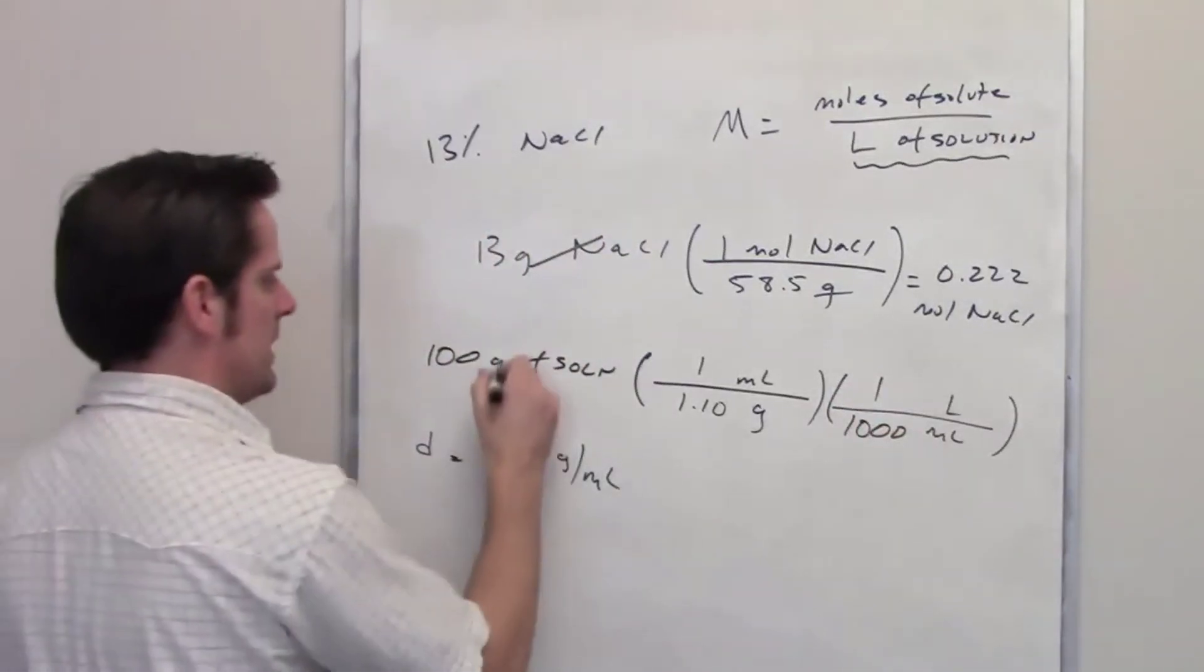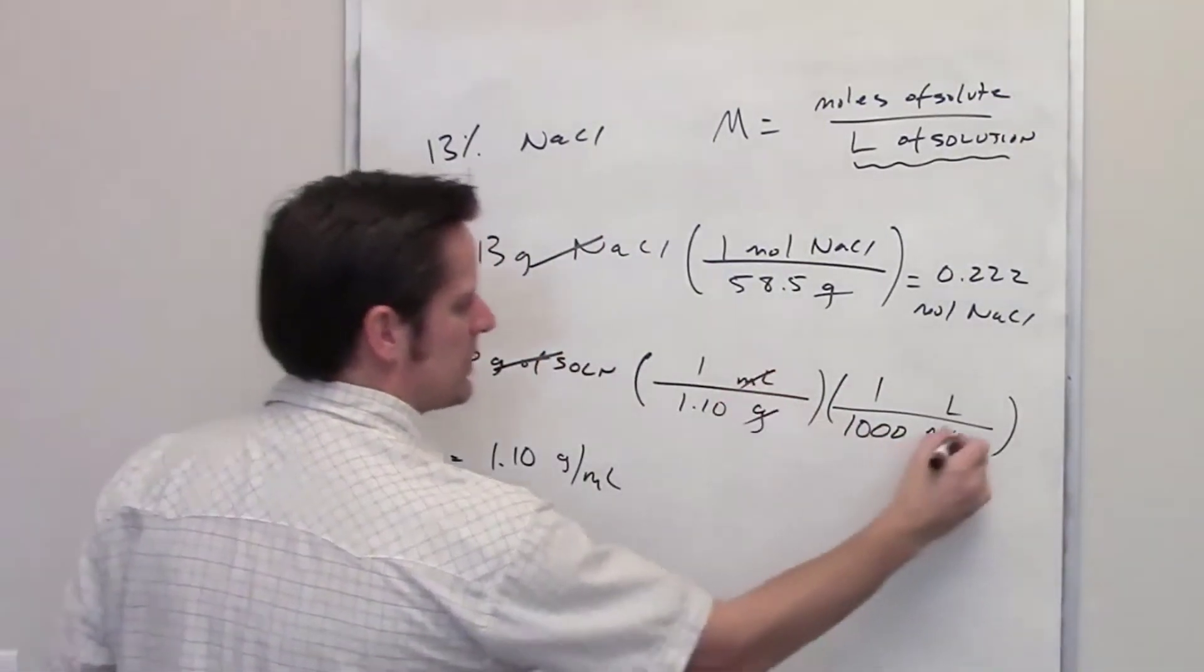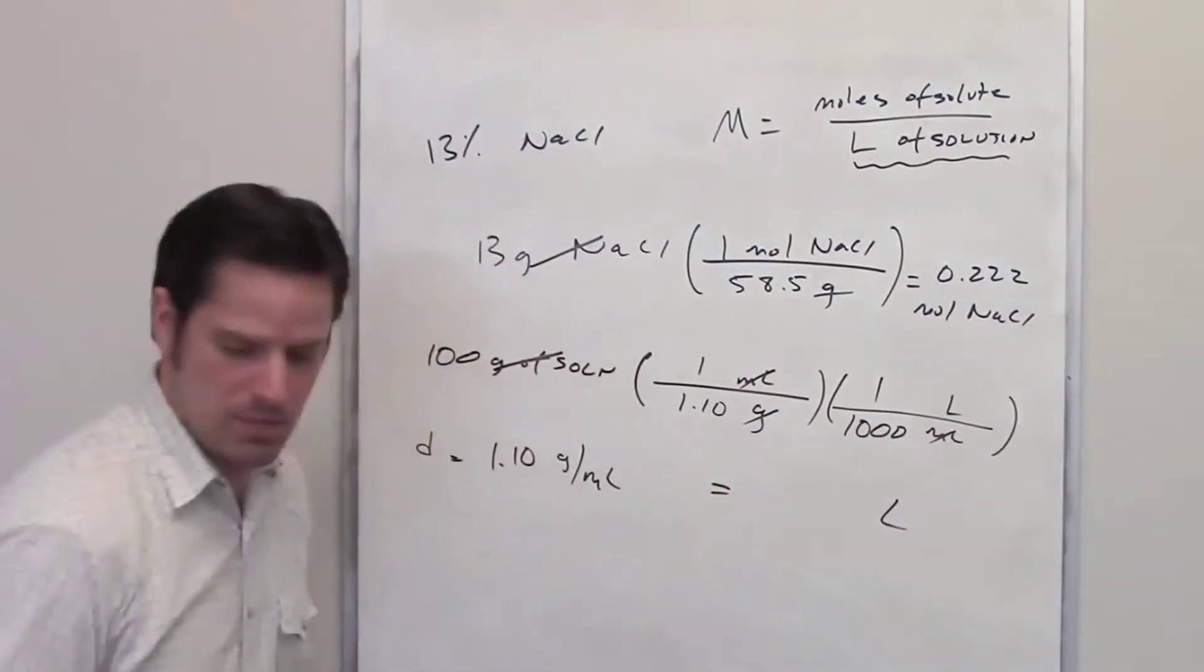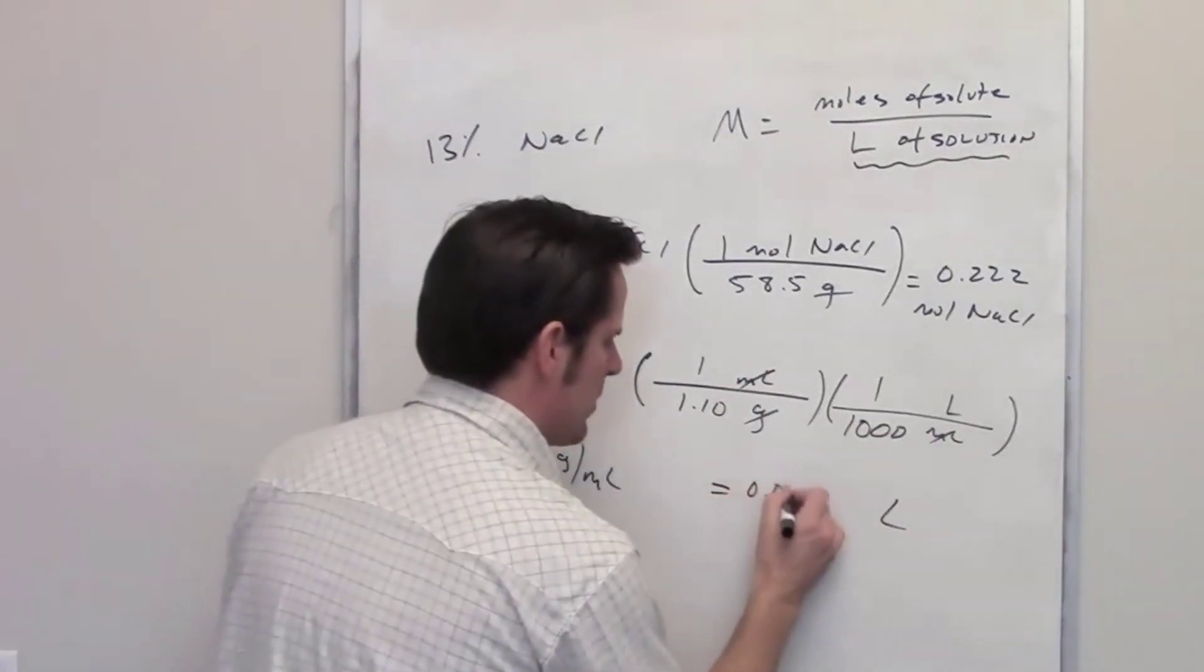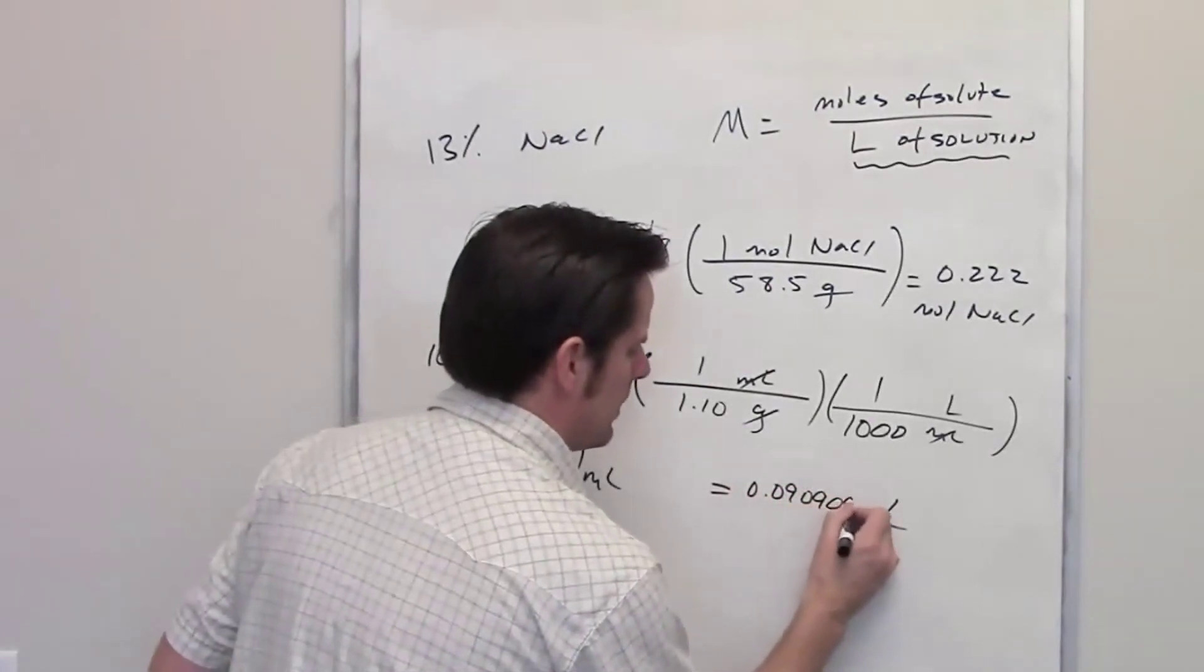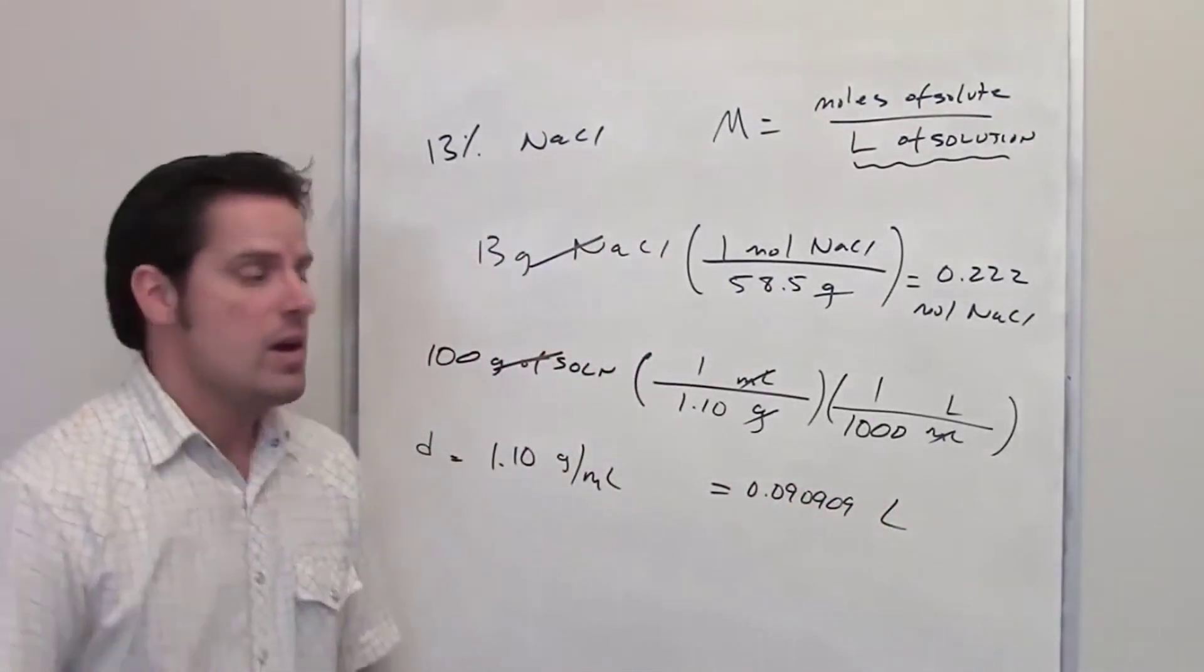1 liter contains 1,000 milliliters. So I can throw this into my calculator. Grams cancel each other out. Mils cancel each other out. I'm left with a certain number of liters. That number comes to 0.09090, et cetera, et cetera, et cetera. And once again, I'm not being very judicious about significant figures at this point. We'll do that in the final answer.